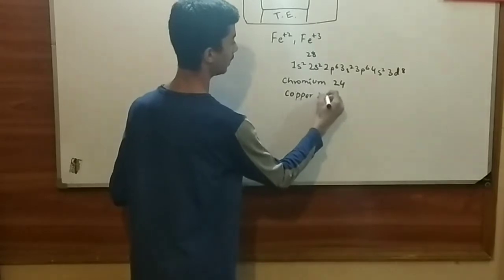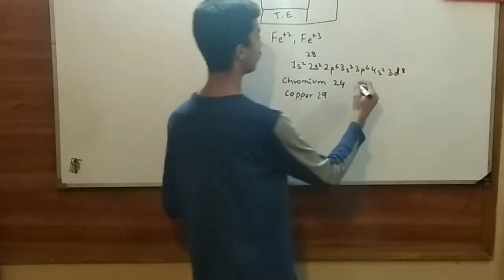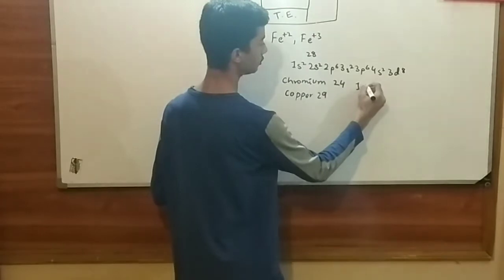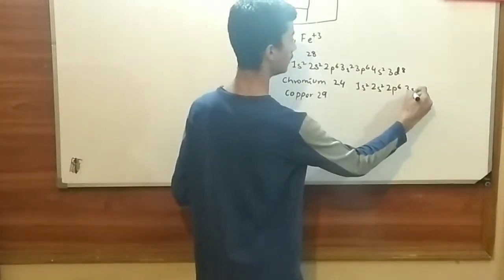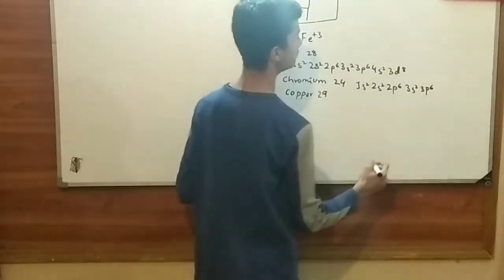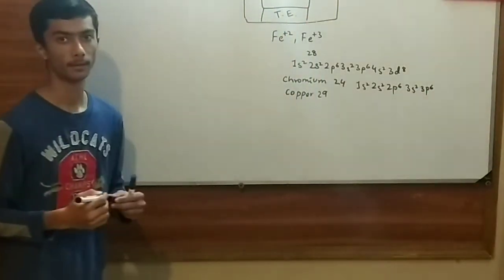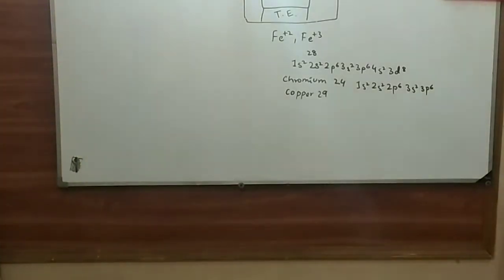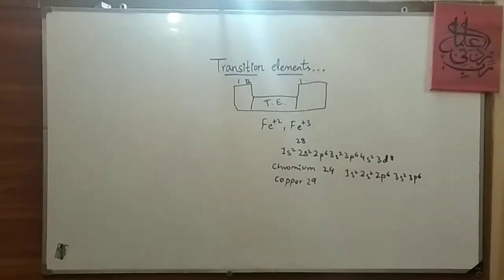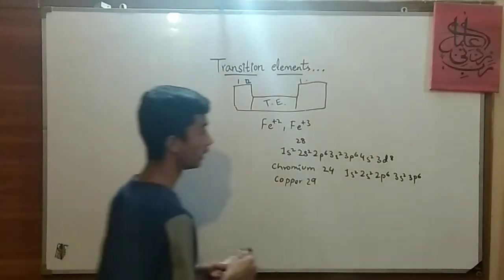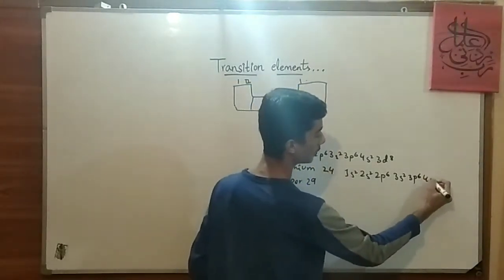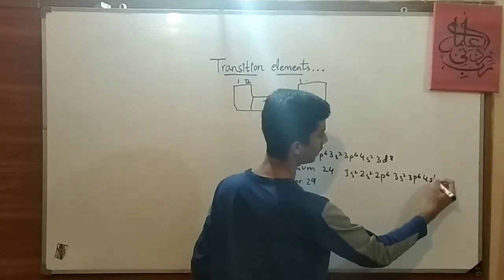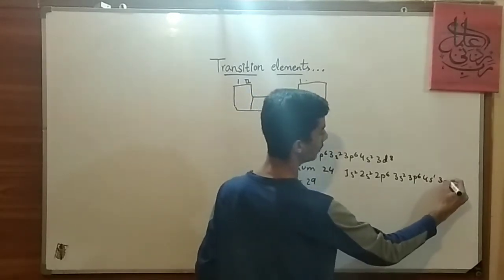Chromium has an atomic number of 24. It would be 1s2, 2s2, 2p6, 3s2, 3p6, and then after 3p6, it's 100% demand that we should write 4s2, but we will be writing 4s1, which is an exception in our series, and then we are going to write 3d5.